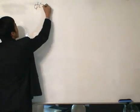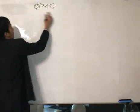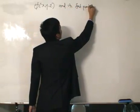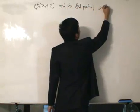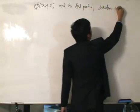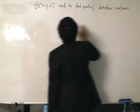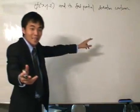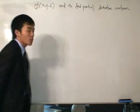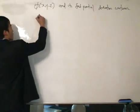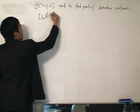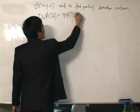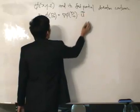Let's assume that we have phi(x,y,z), a scalar field, with its first partial derivatives continuous — meaning we can partially differentiate this with respect to x, y, and z, just like when we use the del operator, and that they'll be continuous. We found that the directional derivative, written as D_u φ at p0, equals del phi evaluated at p0 dot with a unit vector u.